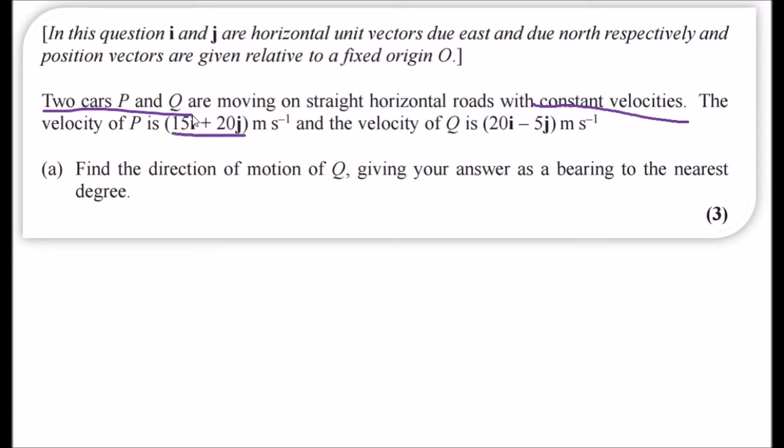The velocity of P is given by 15i plus 20j, and for Q is 20i minus 5j. We need to find the direction of motion of Q, giving your answer as a bearing, so remember three digits to the nearest degree.